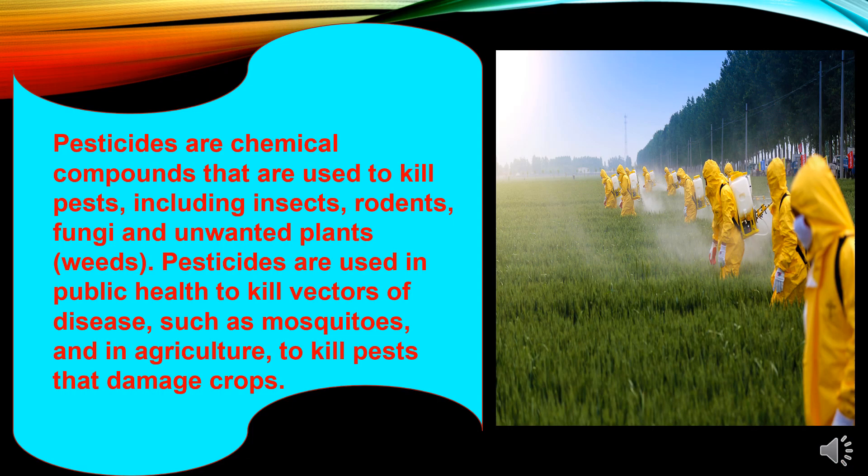What is a pesticide? Pesticides are chemical compounds that are used to kill pests including insects, rodents, fungi and unwanted plants — meaning weeds. Pesticides are used in public health to kill vectors of diseases such as mosquitoes, and in agriculture to kill pests that damage crops.